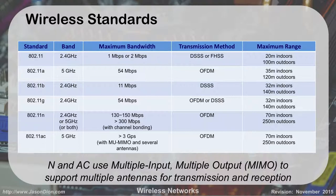Wireless N and Wireless AC are the two newest ones we use nowadays. They use MIMO — multiple input, multiple output — which means they have multiple antennas for transmission and reception. Generally, you'll find they have three antennas or more.